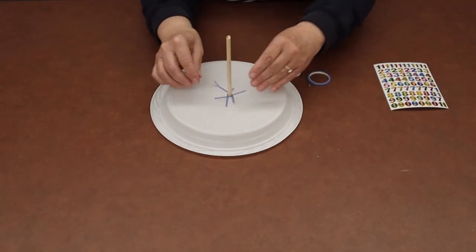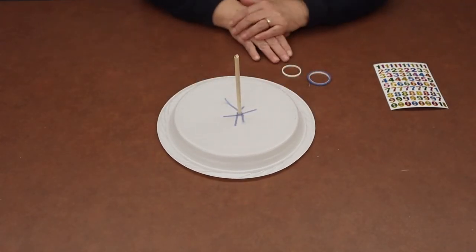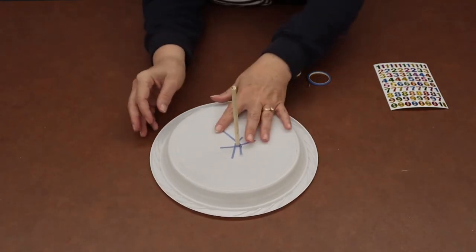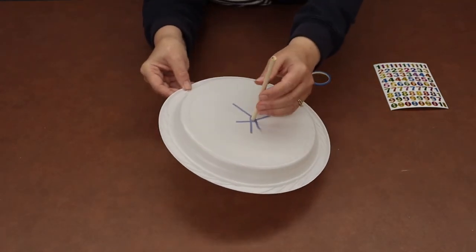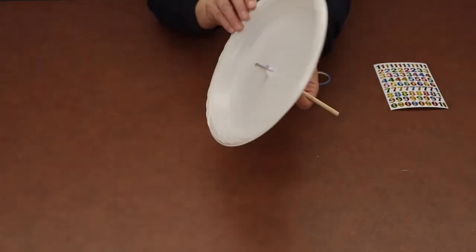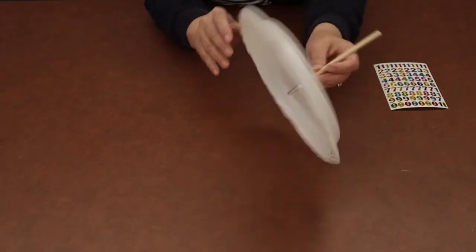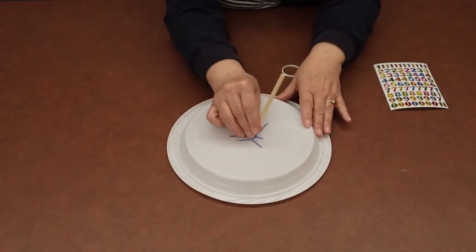That's pretty good. So that's our base for our sundial. And again, if anybody has any questions, you just stick the dowel through the hole in your plate and poke it through to the bottom. Just like that.